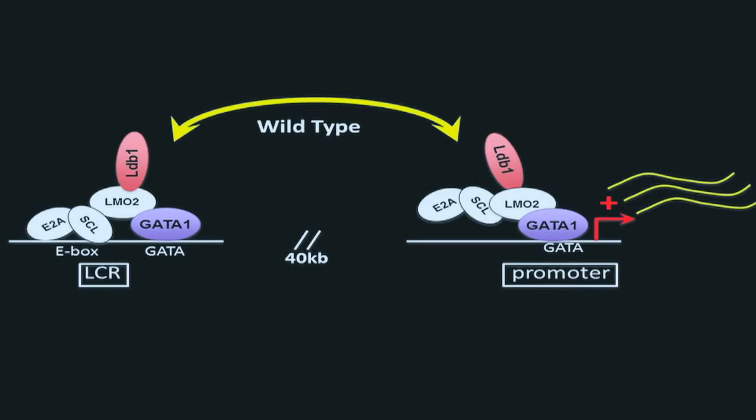In wild-type erythroid cells, GATA1 and LDB1 co-occupy LCR and the beta-globin promoter. Concurrently, an LCR beta-globin loop is formed and beta-globin transcription is activated.